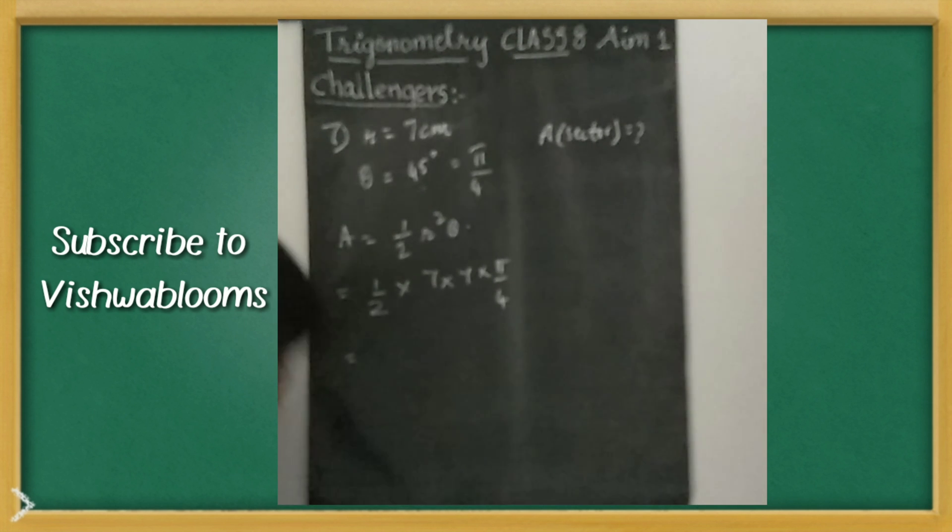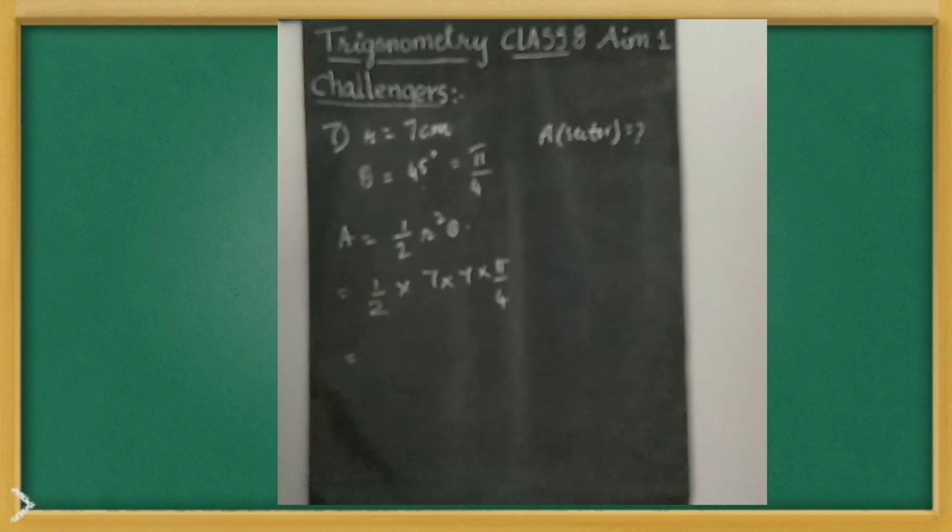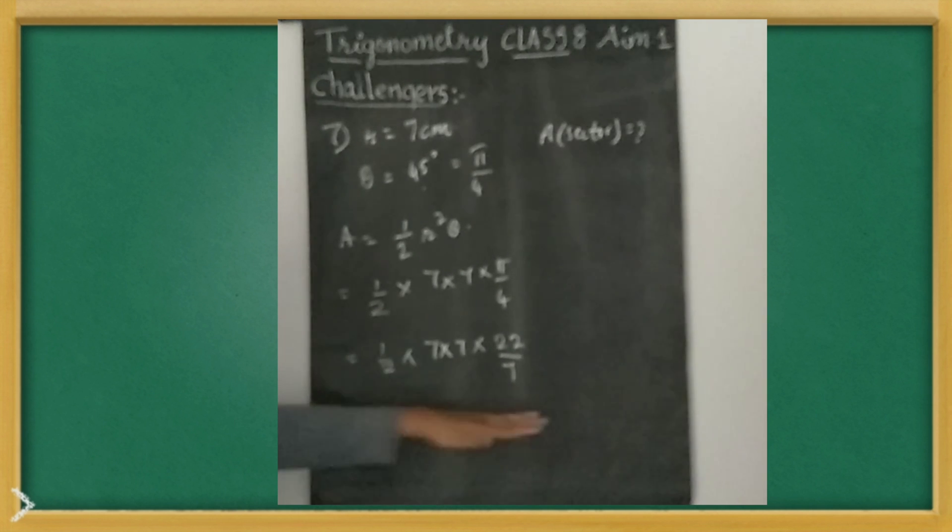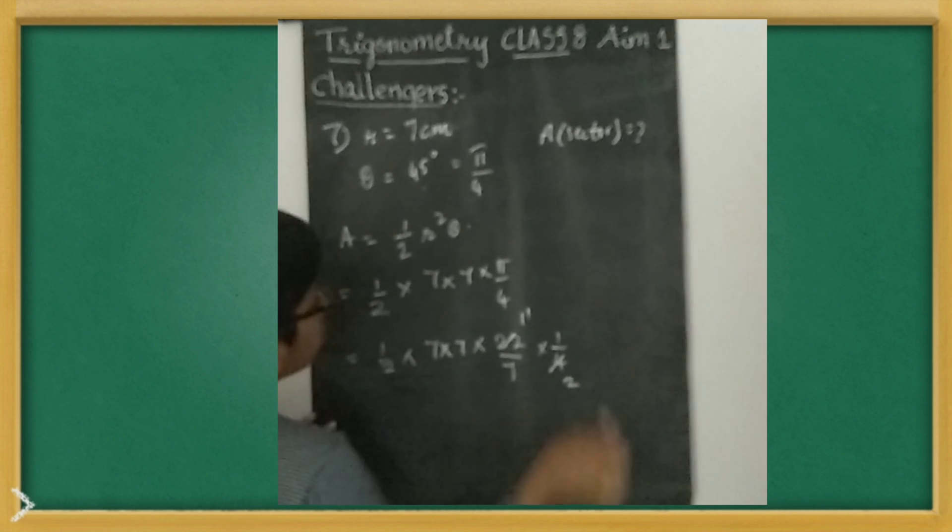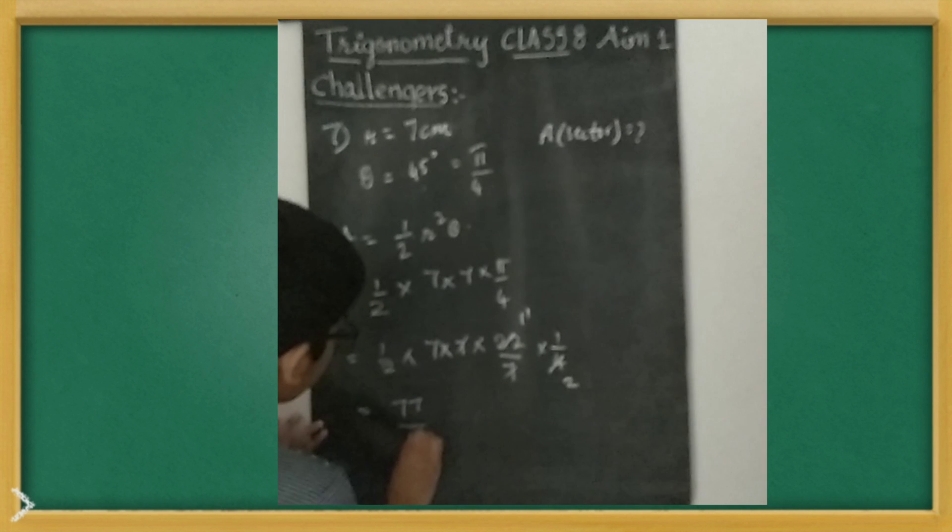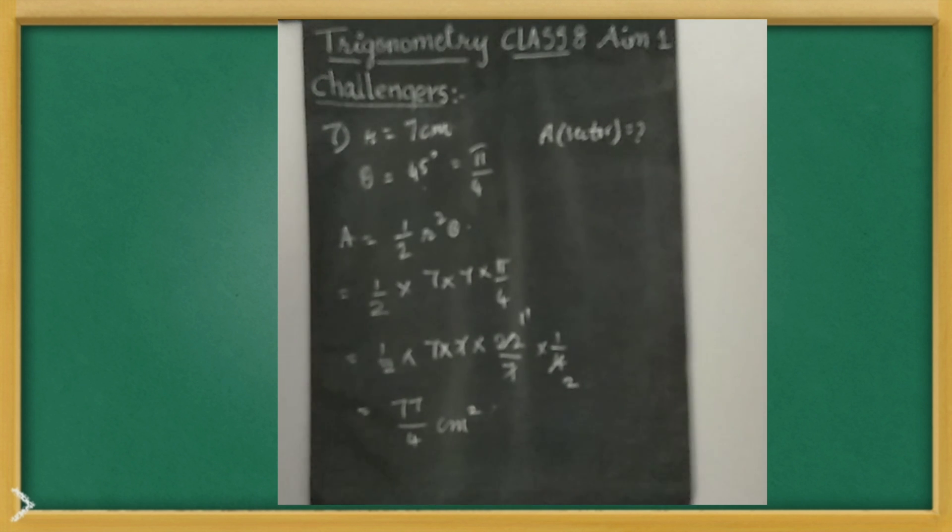Now what we have to do? Area formula: half into R squared theta. So half means 1/2 only, we will write as it is. Into radius 7, 7 into 7 is 7 squared. Theta, π/4. Then term cancellation we can do. We have to put this value, then it will be easy. Half into 7 into 7, 22/7 by 4. Now 22, 11, 2. Now 7, 7 also cancel. Then when you cancel everything, when you multiply everything, we are going to get 77 by 4 centimeters squared.